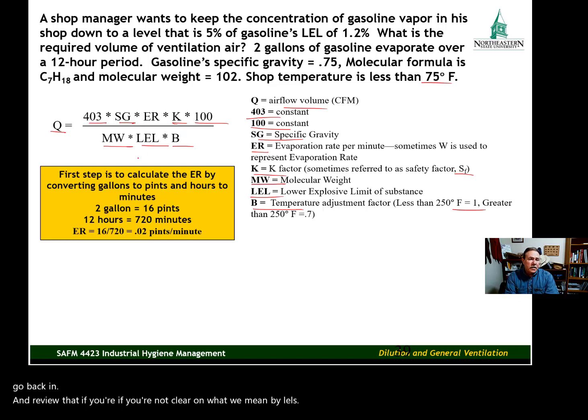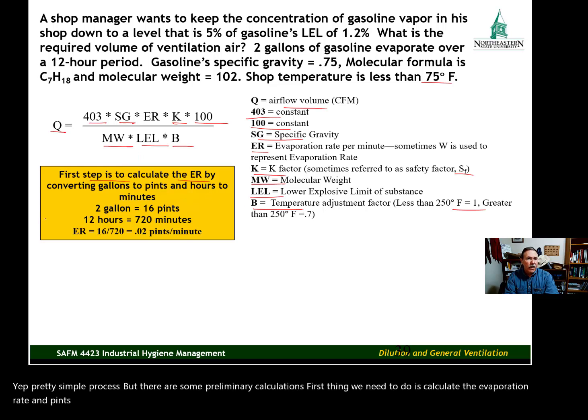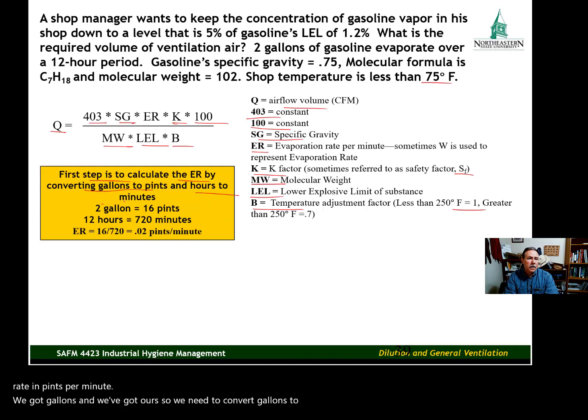It's a pretty simple process, but there are some preliminary calculations. First thing we need to do is calculate the evaporation rate in pints per minute. We've got gallons and hours, so we need to convert gallons to pints and hours to minutes. In one gallon there are 8 pints, so in two gallons we have 16 pints evaporating over 12 hours, which is 720 minutes.